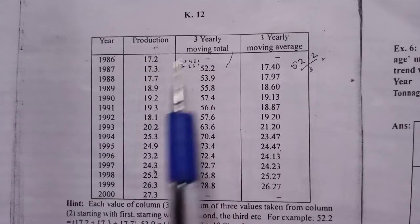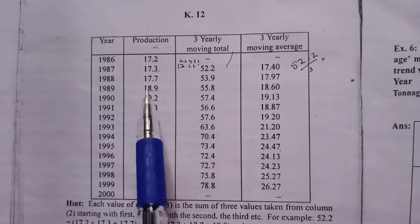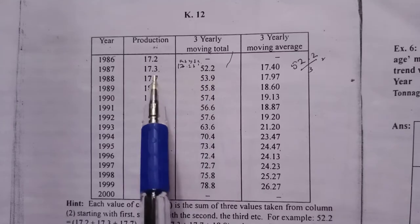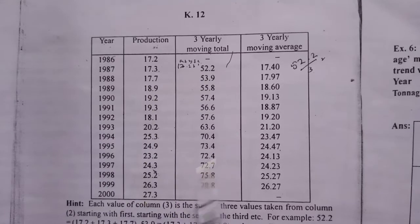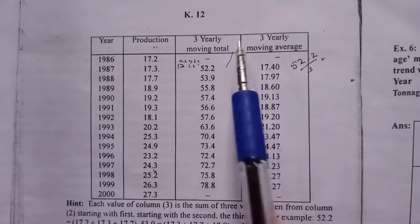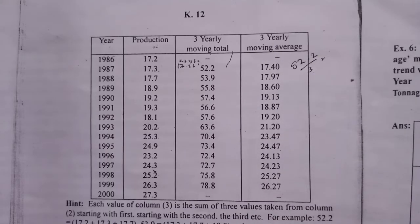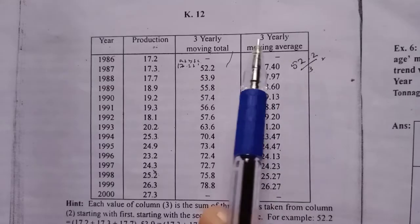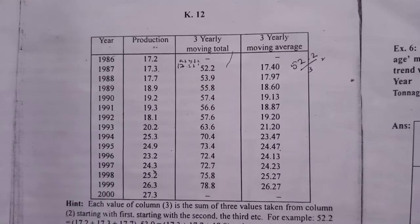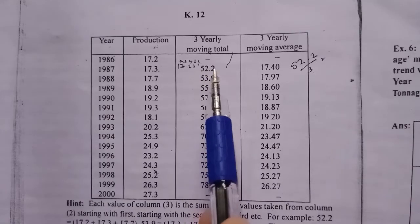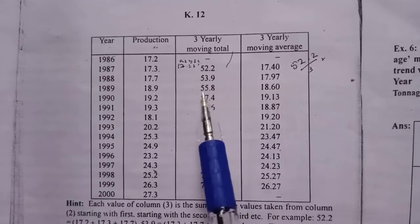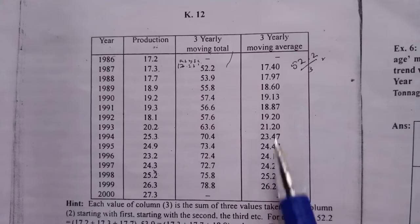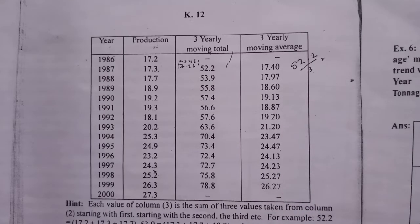The values are 17.2, 17.3, 17.7, 18.9. That's 53.9 — this is the 3-yearly moving total. The 3-yearly moving average: 52.2 divided by 3 equals 17.4; 53.9 divided by 3 equals 17.97; 55.8 divided by 3 equals 18.60. This is the 3-yearly moving average.